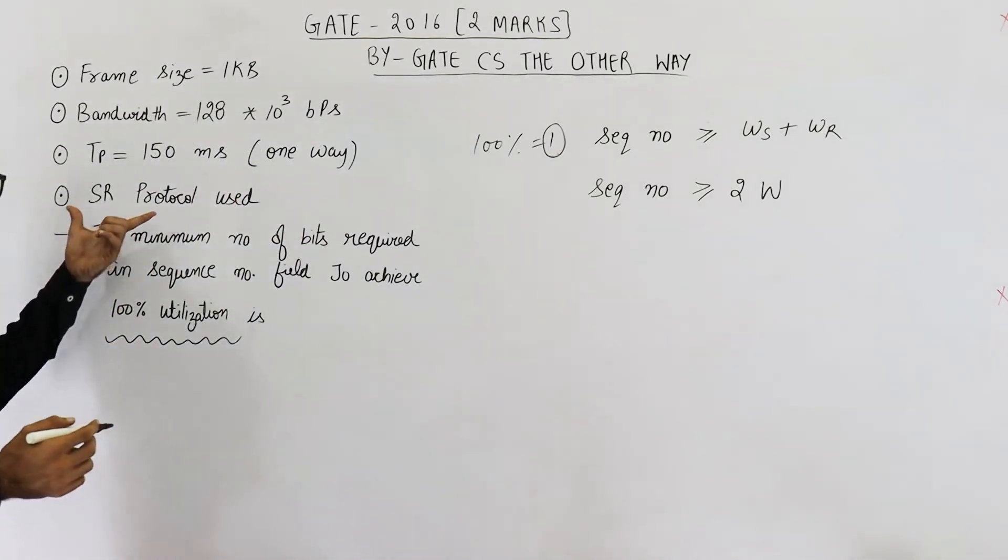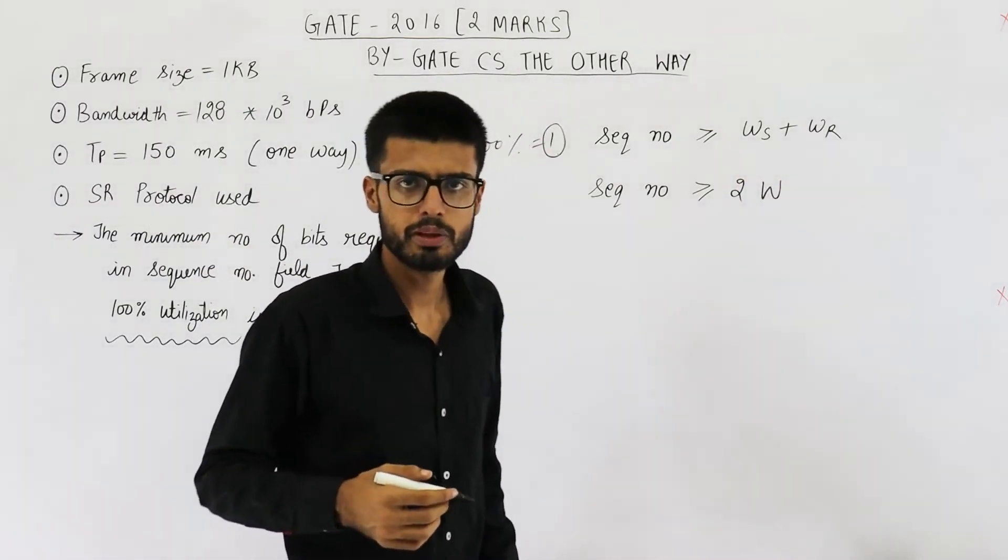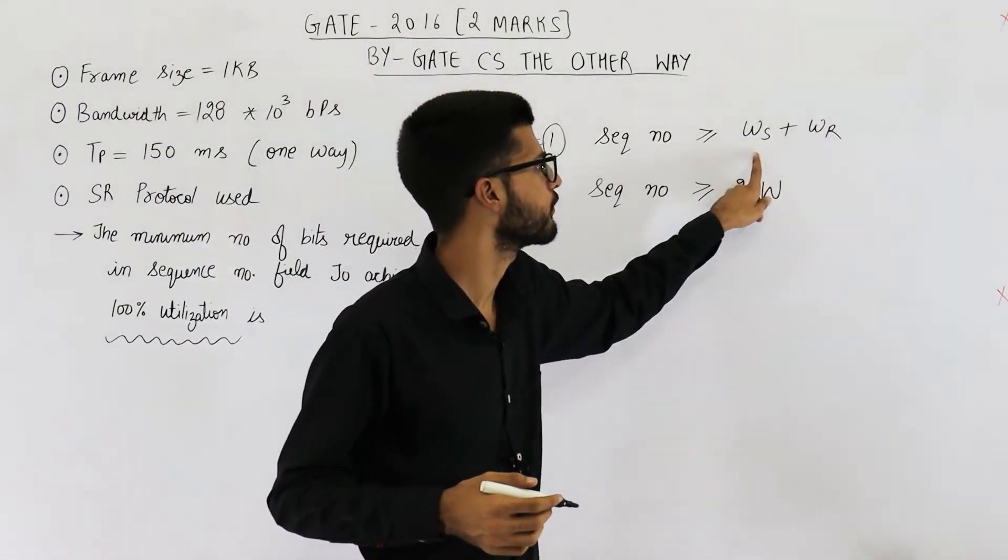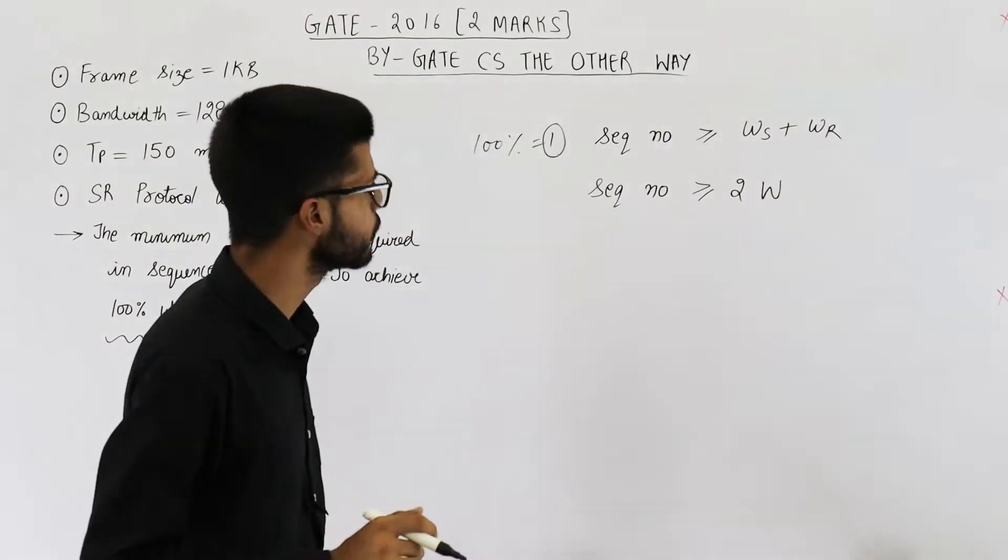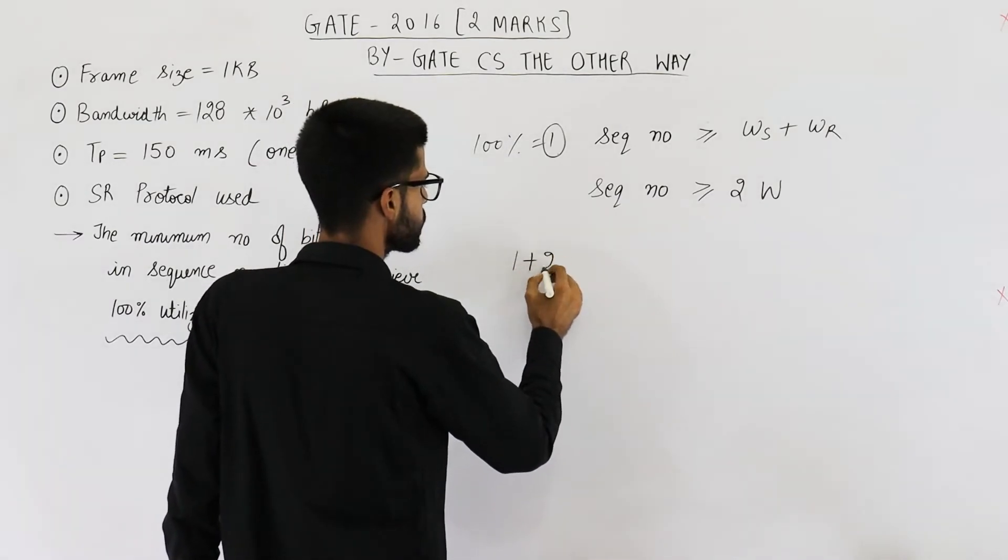And because we are using SR type of sliding window protocol, so obviously receiver window size will also be equal to 1 plus 2a because both of these are equal. I hope you know all this stuff. Anyways, let's go ahead and find out the value of 1 plus 2a.